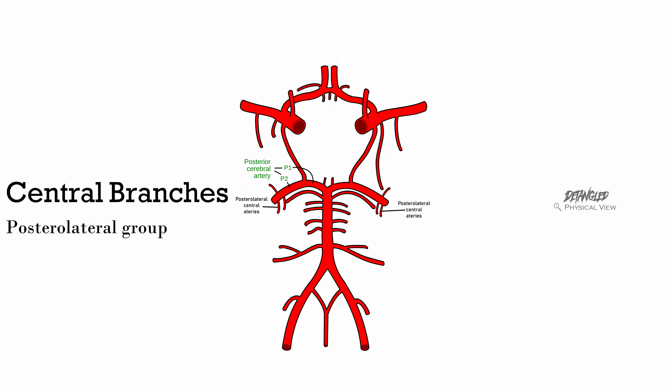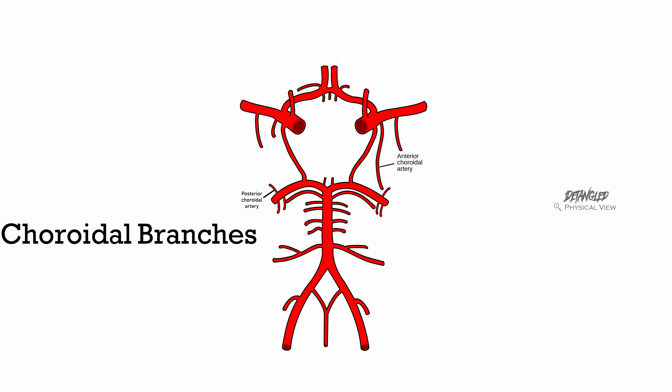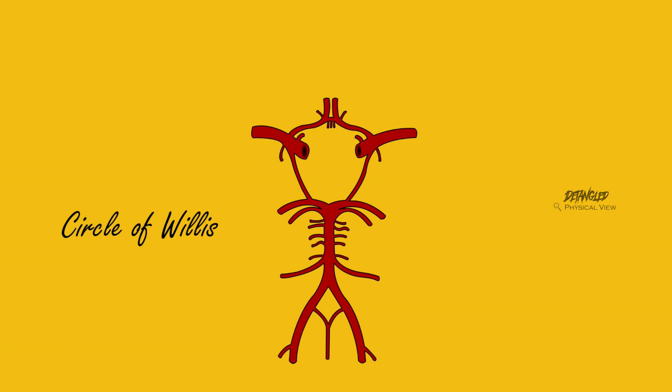Choroidal branches consist of two arteries: the anterior choroidal artery, which arises from the internal carotid artery, and the posterior choroidal artery, which arises from the posterior cerebral artery.